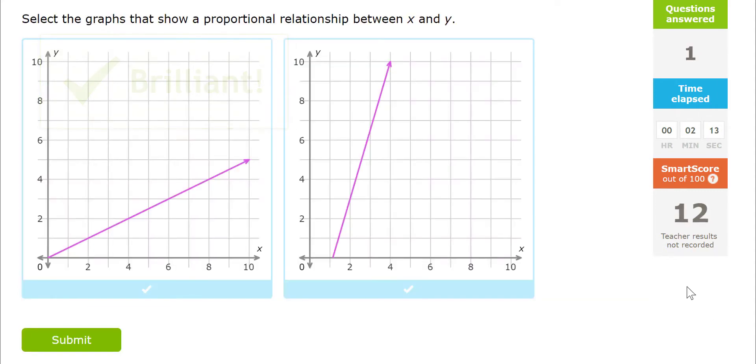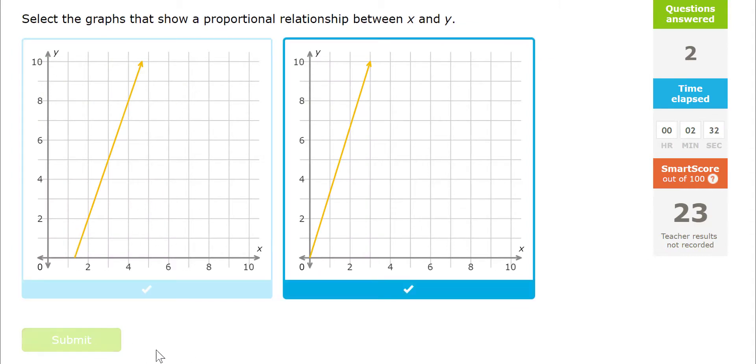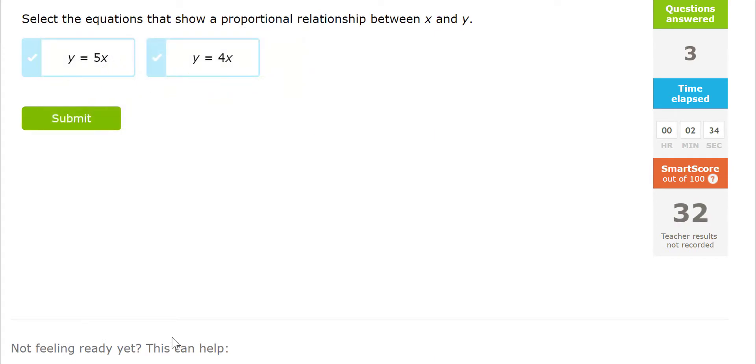Now we're starting to get it. Next, again, both straight lines, but only one of them starts at zero and then goes up. This one doesn't start at zero or the origin, so I'm not going to pick that one. This one does start at the origin. So that's a proportional relationship. It's also a straight line.